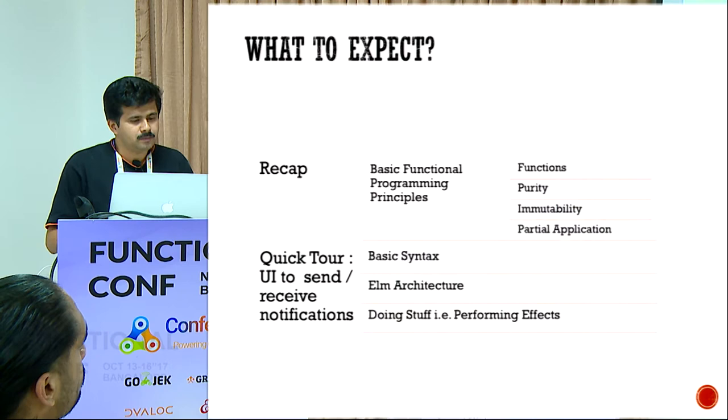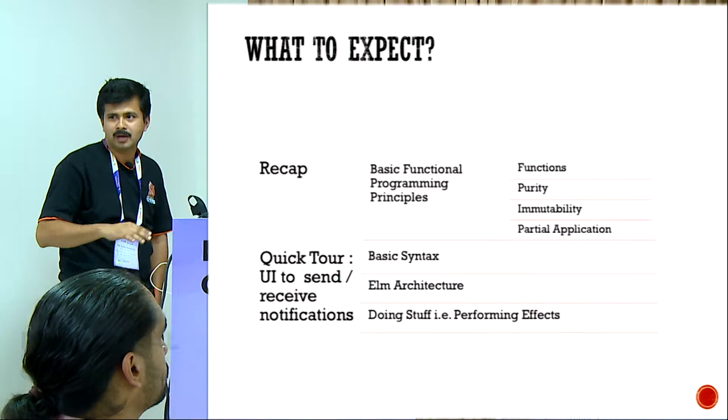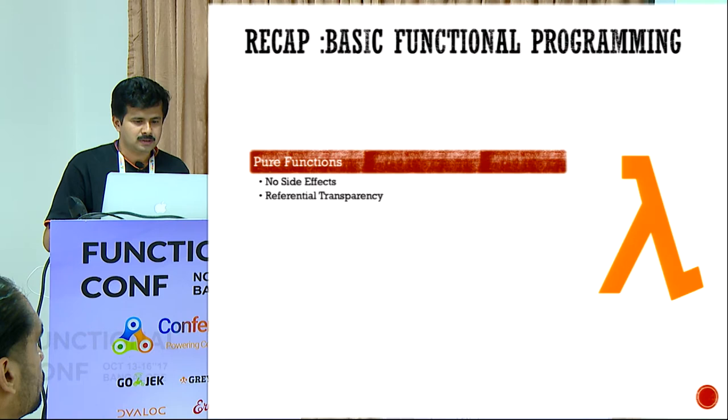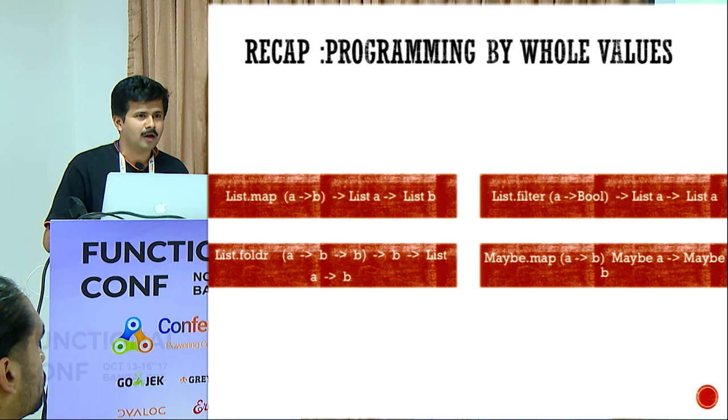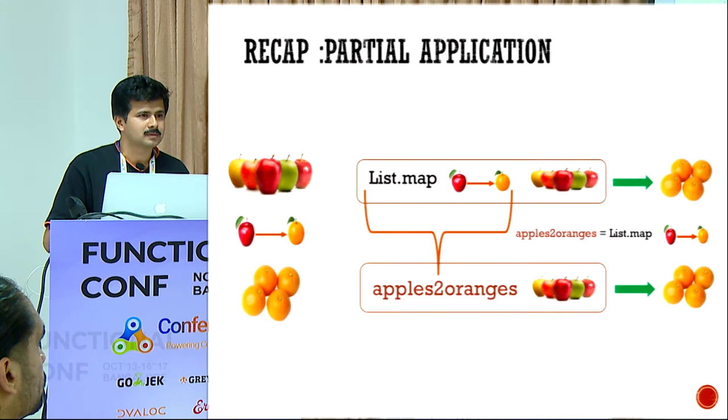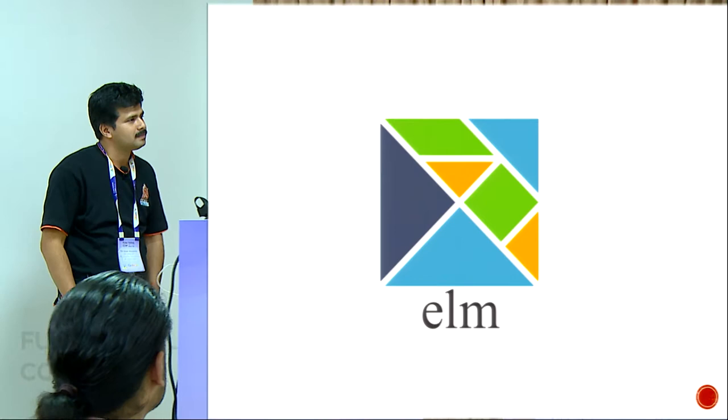So the prerequisites — I want to do a recap which I'll skip now. I'll skip the basics of functional programming and go directly to the Elm part. I'll skip all these things since you're already aware of map, flat map, filter, fold, partial application. Let's bring this into Elm.